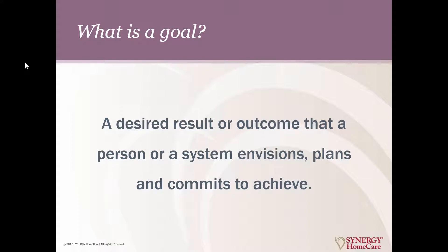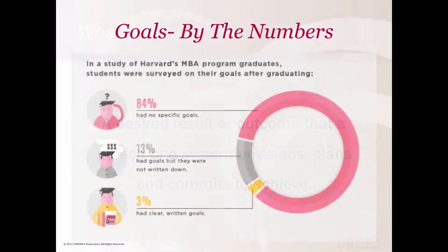So what is a goal for us? Perhaps it's a desired result or outcome that a person or a system envisions and plans to and commits to achieving. As we discuss this today, this may not just be about individual goal planning, but you may be looking at this based on your business, based on a system that you're working with, thinking about how a family is putting together a set of goals, or how a team is working together to achieve a goal.